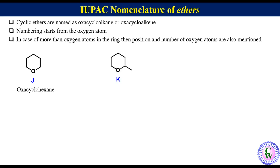Compound K: in this case we need to do numbering because there is a methyl substituent. Numbering starts from the oxygen atom and continues in the direction giving the lowest number to the substituted carbon. So the numbering will be anti-clockwise as 1, 2, 3, 4, 5, and 6. The position of the methyl group is 2, so the IUPAC name of this molecule will be 2-methyloxacyclohexane.